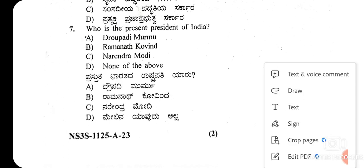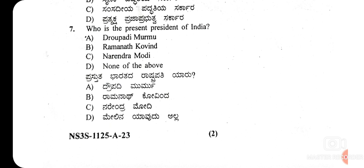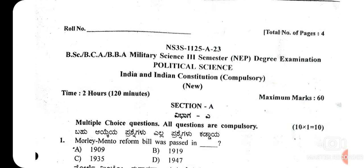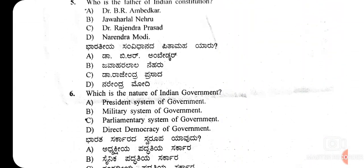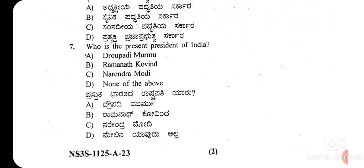The 7th question is: who is the present president of India? This question was given in the 2023 examination. The president of India is Draupadi Murmu — option A. She is the 15th president of India. Since 2022, she has been the president, and she is the second woman president after Pratibha Patil.